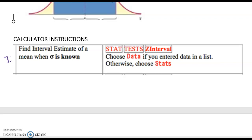So this is directly from your calculator packet from the beginning of the semester finding an interval estimate of a mean when sigma is known. Just like we did for interval estimates for a proportion we go stat test but this time we're going to click on Z interval and follow the prompts.